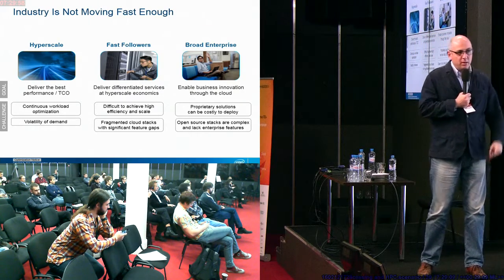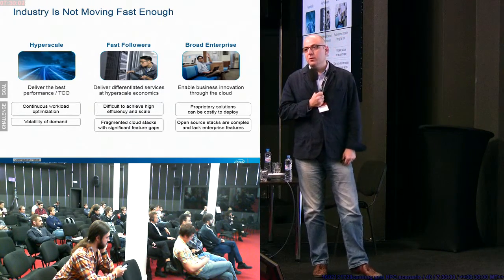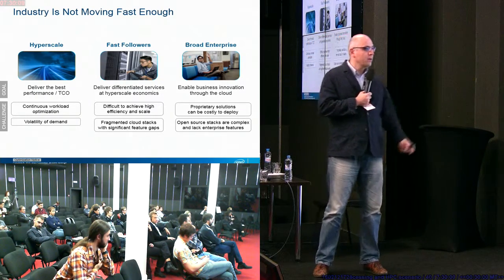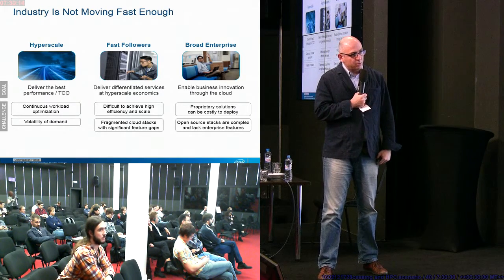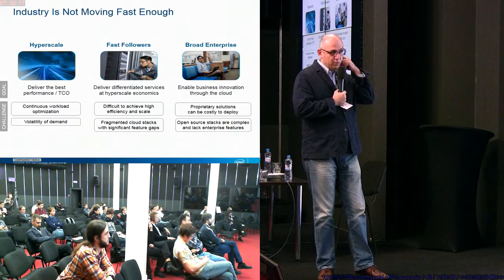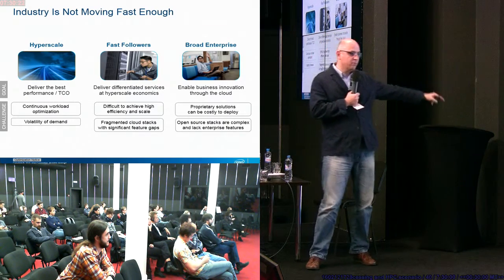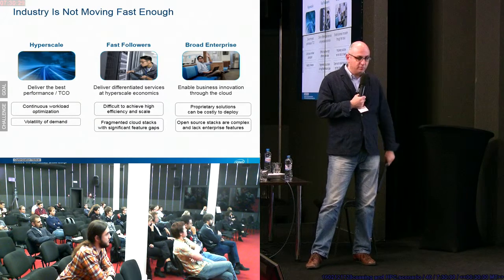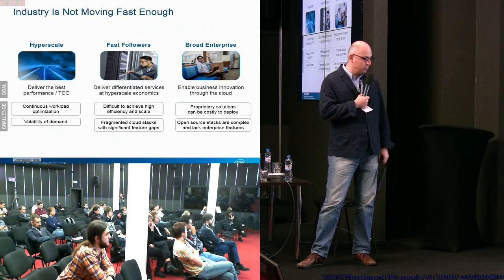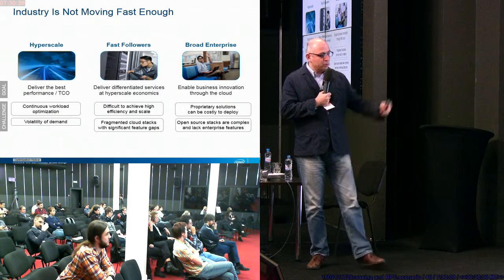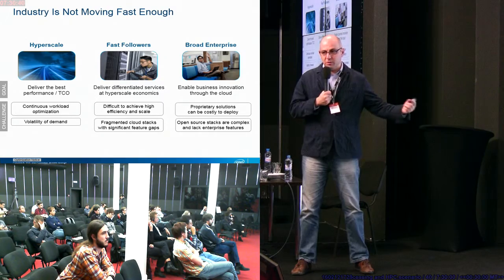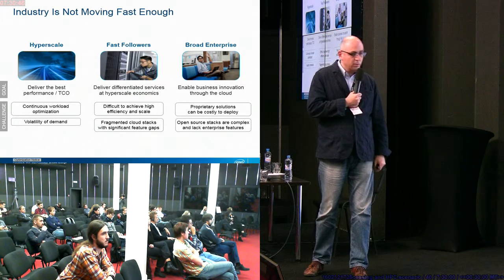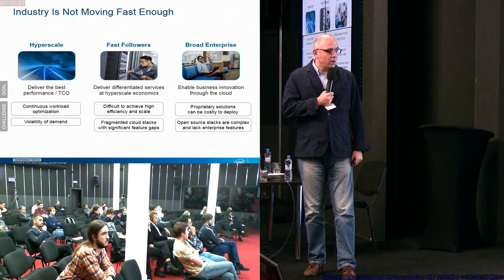Fast followers' goal is how to compete with Amazon — to take an application, deploy it, and adjust infrastructure to compete with Amazon without having the economy of scale and hyper-scalability that Amazon has. Then there are broad enterprise requirements. These three — hyperscale, fast followers, broad enterprise — need to optimize tasks to current or future infrastructure, achieve large-scale efficiency, economy of scale, and combat the fragmented stack that cloud infrastructure offers.